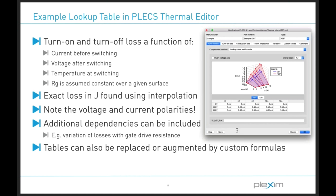All devices sitting on a heat sink component will have the same temperature. As conduction and switching losses are injected into the thermal network, the heat sink's internal temperature will increase. Externally connected thermal networks can be added to show various thermal layers — for example, the transitions from a device's junction to its case, the case to a physical heat sink, and finally the heat sink to the ambient environment.